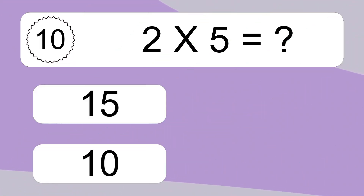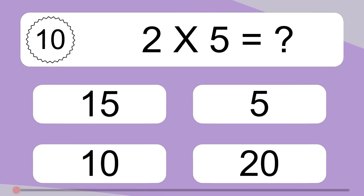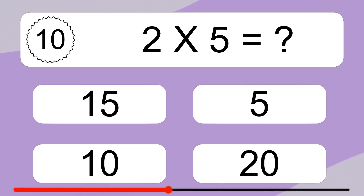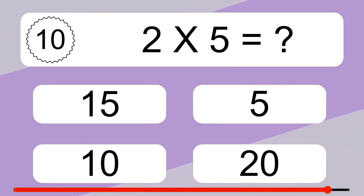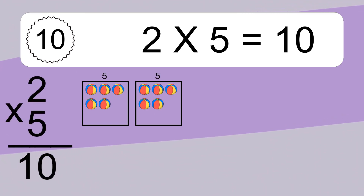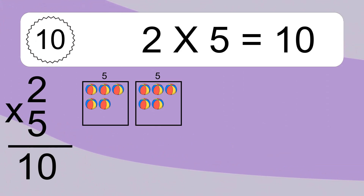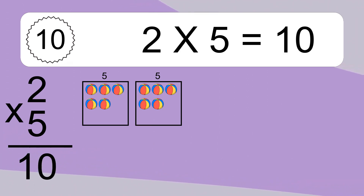2 times 5 equals what? 2 times 5 equals 10. We have 2 boxes and each box has 5 colorful balls inside. If you count all the balls in all the boxes together, you will have 2 times 5 balls. This equals 10 balls.